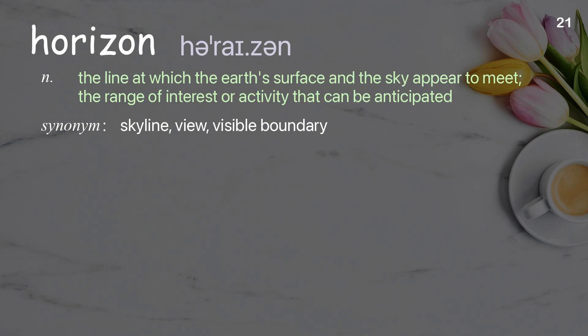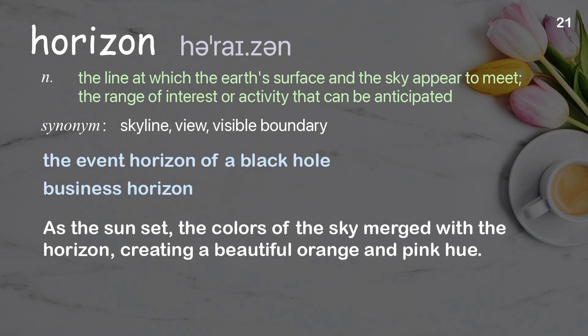Horizon: the line at which the Earth's surface and the sky appear to meet; the range of interest or activity that can be anticipated. As the sun set, the colors of the sky merged with the horizon, creating a beautiful orange and pink hue.